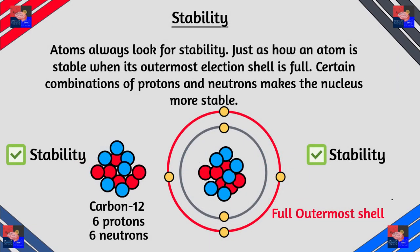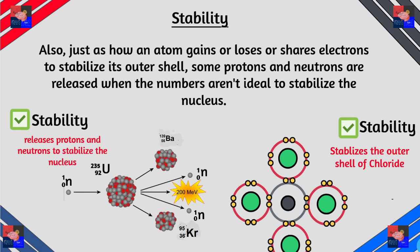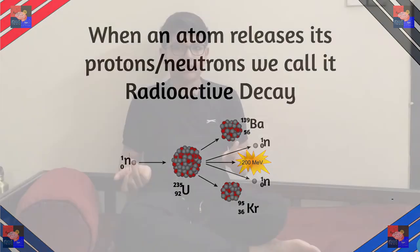Now as we've learned so far in this series, atoms always look for stability. Just as the specific number of electrons in its outer shell makes the atom more stable, certain combinations of protons and neutrons make the nucleus more stable. And just as when the numbers aren't preferable — the atom would share, exchange, or gain electrons — when the numbers aren't favorable, the nucleus would also change its numbers. Now before we continue, let's look at the origins of how we came to know about radioactivity.